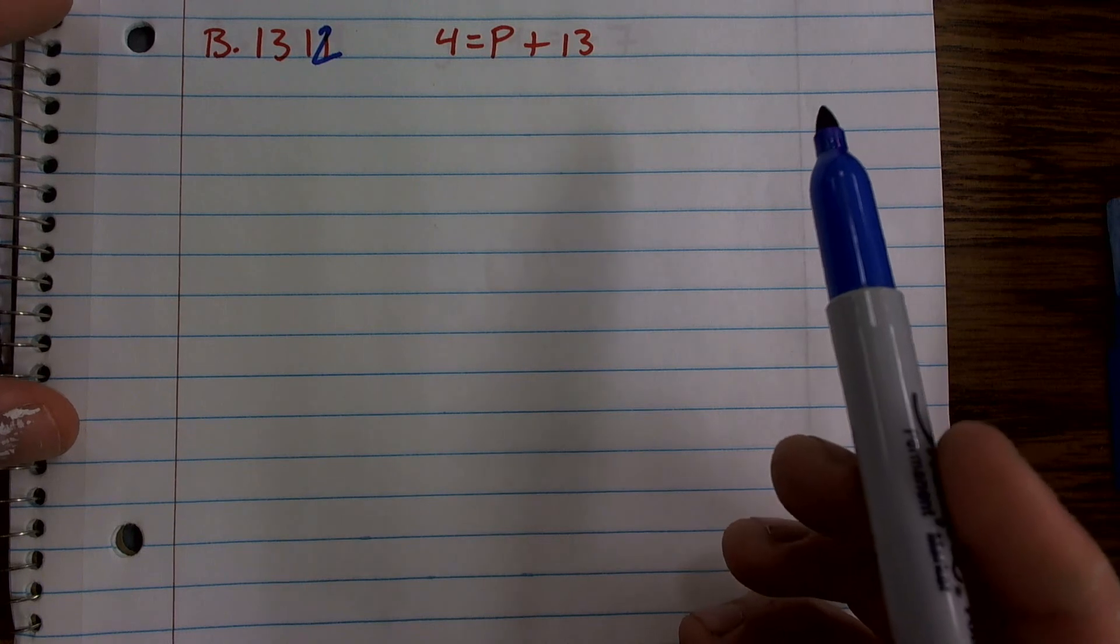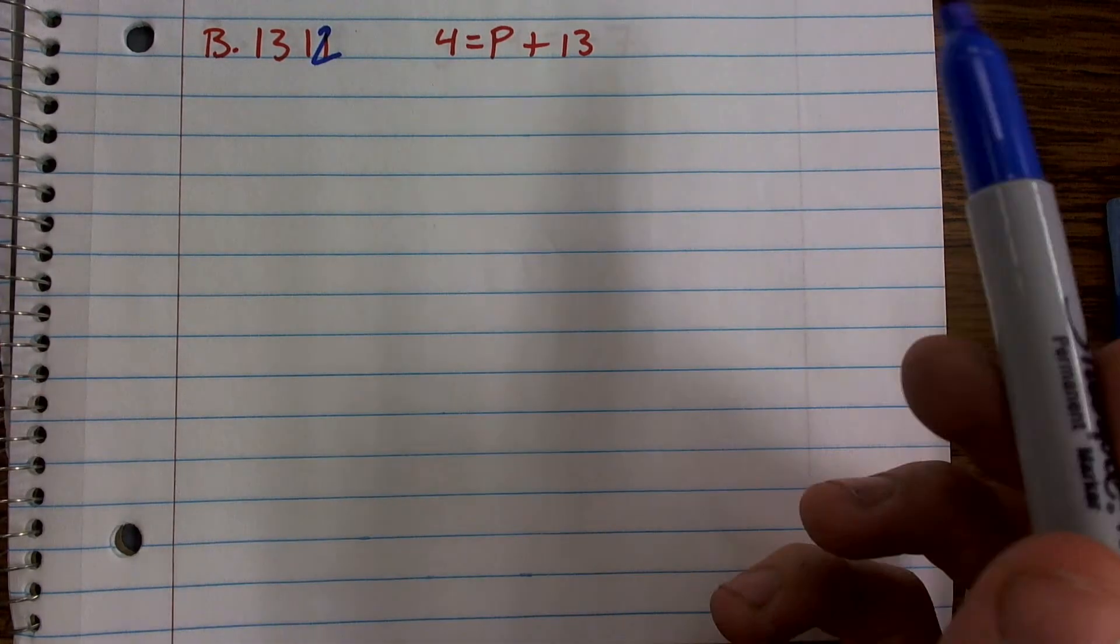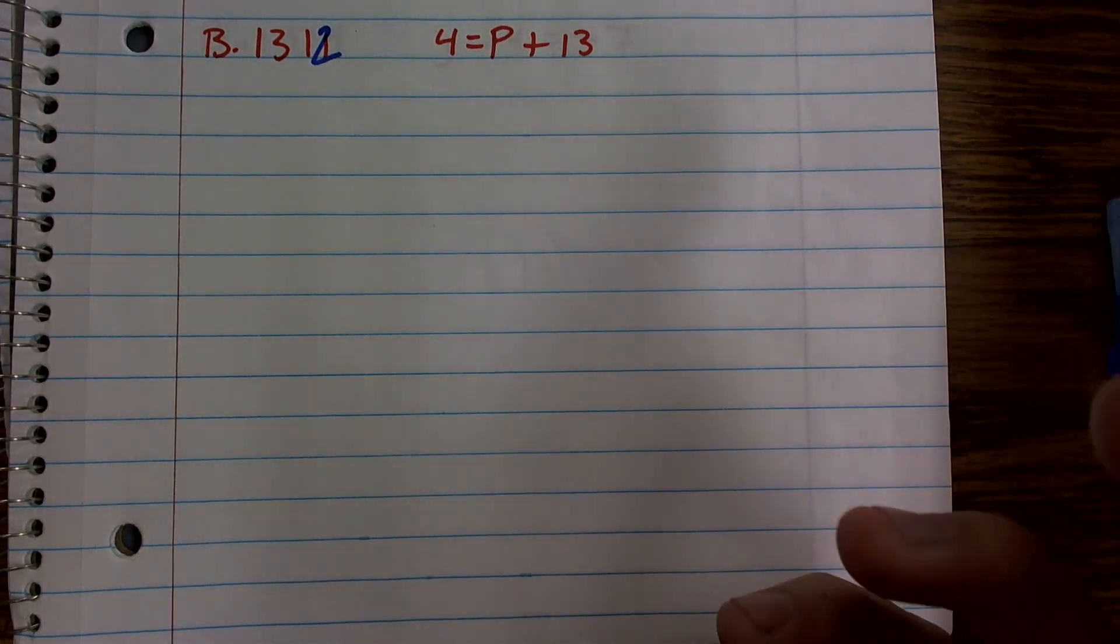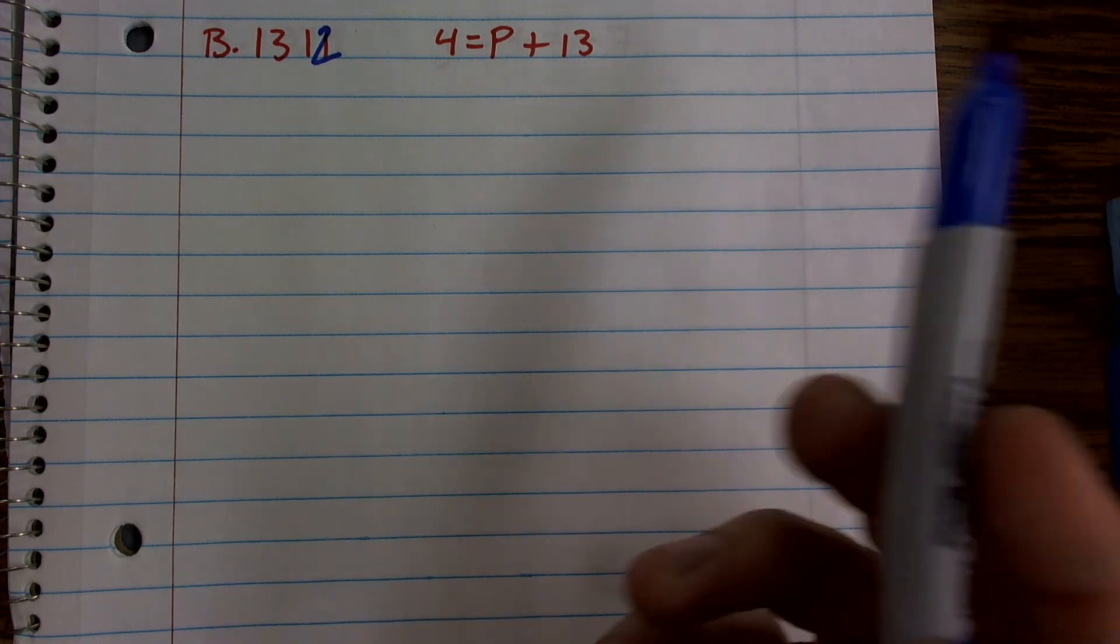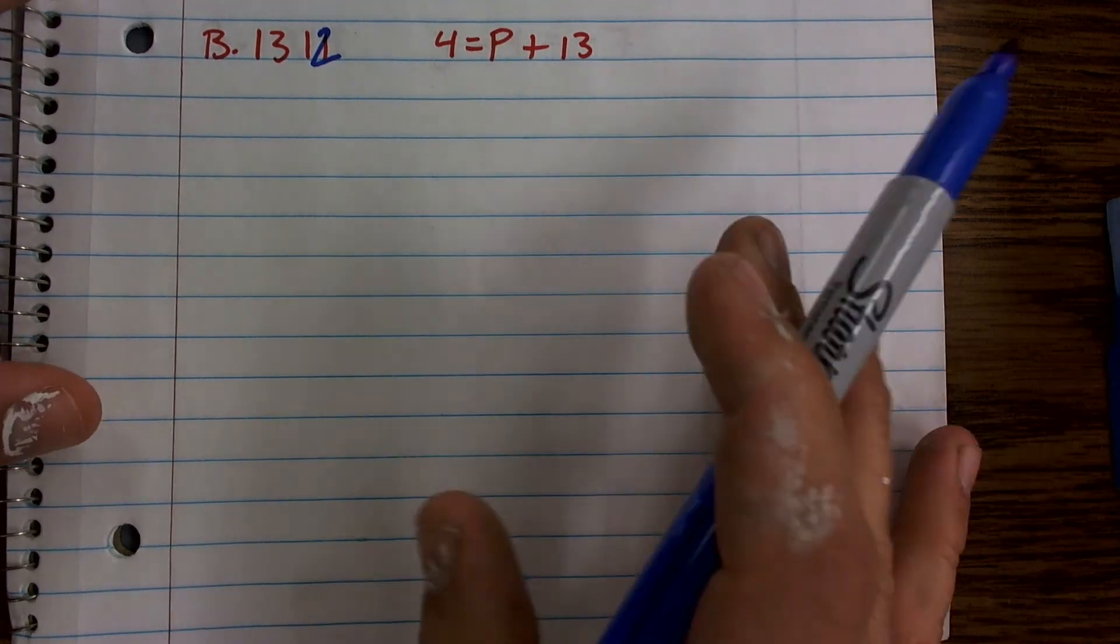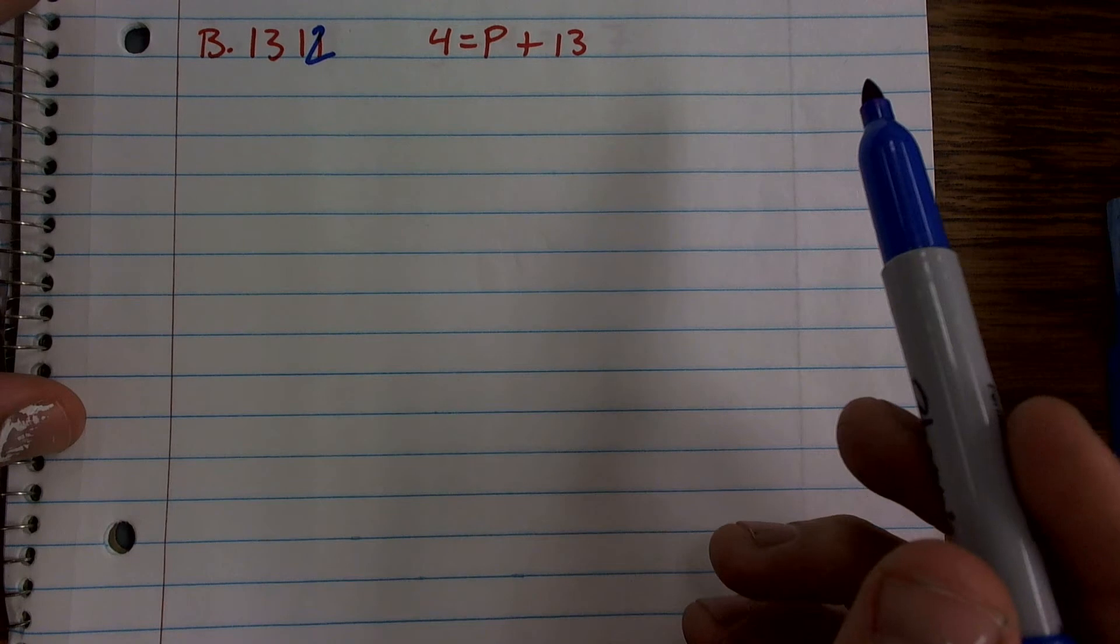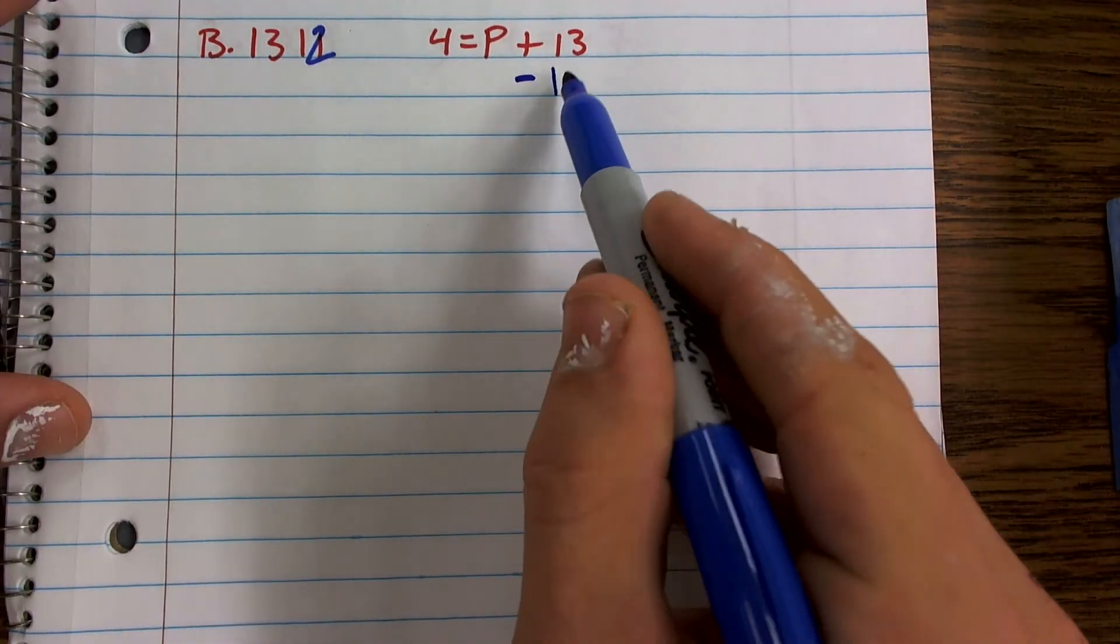So I need to look at what is my operation that's applying to my variable. Well, I have p plus 13. So that means the inverse operation of adding 13 would be to subtract 13.